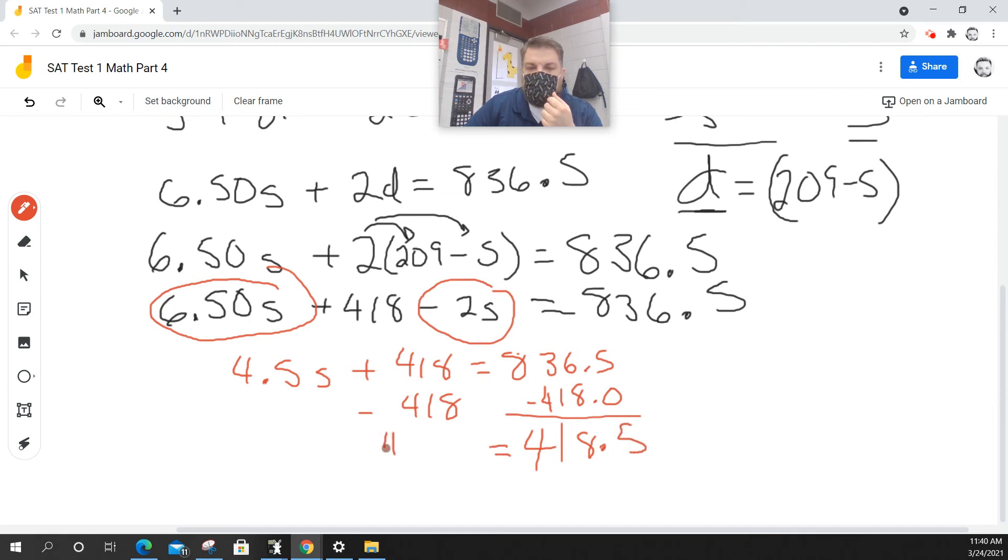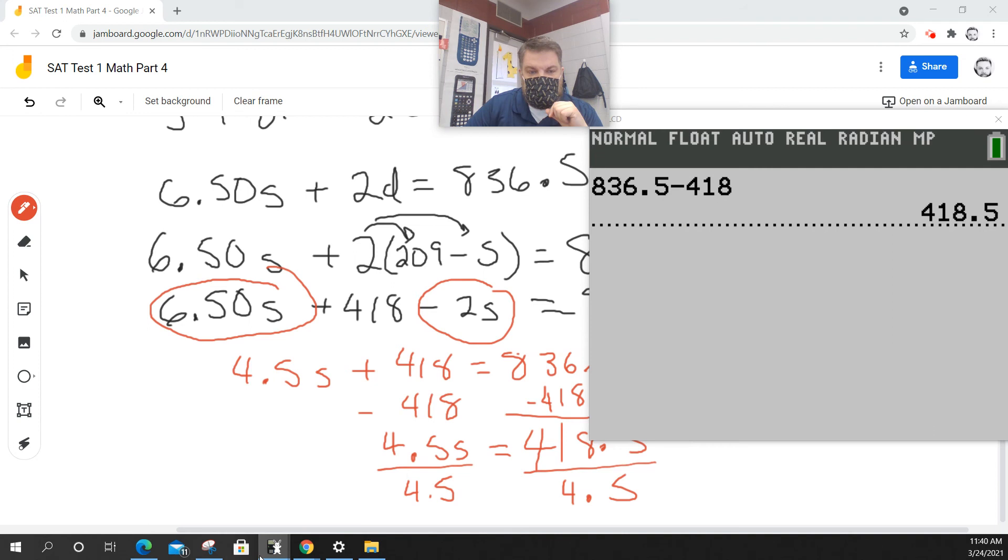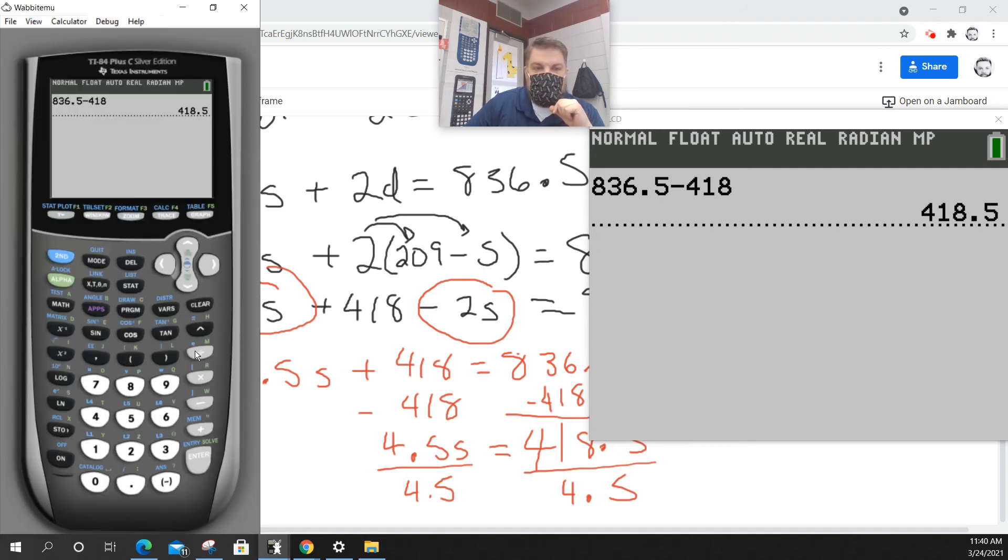So this is 418.5, and that is equal to 4.5S. Divide both sides by 4.5. Again, I'm going to use my handy-dandy calculator. I'm going to take the answer that I have and divide it by 4.5. 93.